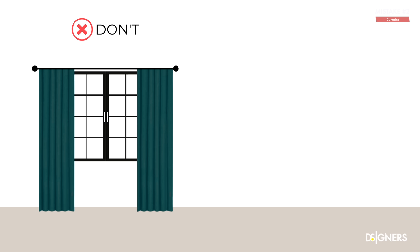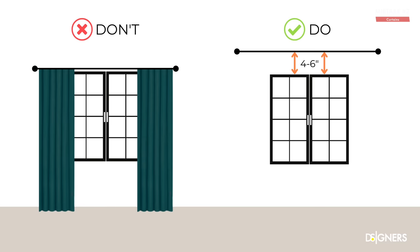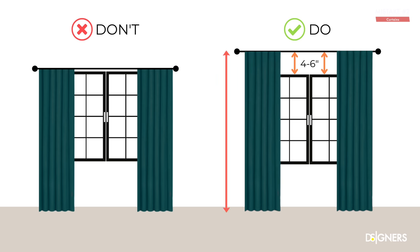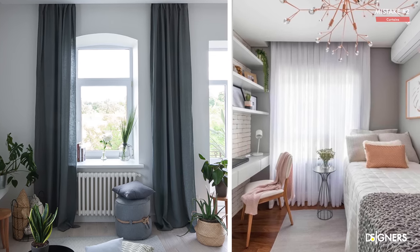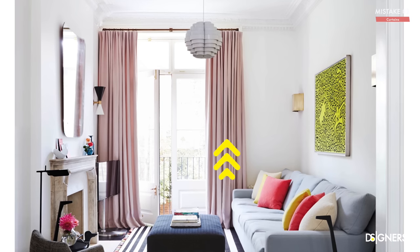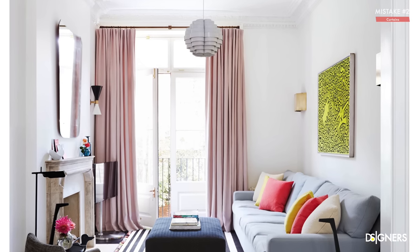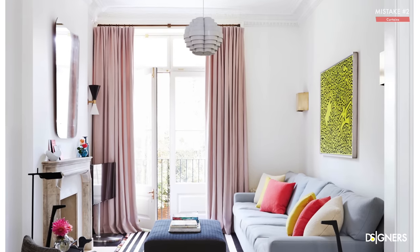Mistake two is placing your curtain rod too low. Hanging your rod too low means having your rod very near your top window frame, which can look unattractive and disproportionate. A good rule is to hang your curtain rods four to six inches above the top of your window frame. By doing this you will accentuate the height of your space, making it appear larger and airy. The curtain panels draw the eye upward along the entire length of the curtains, creating an illusion of height and spaciousness.